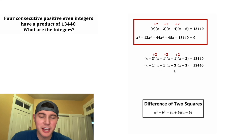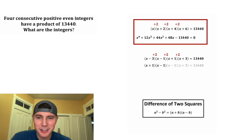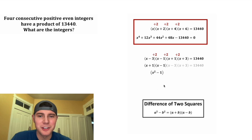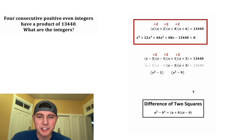If we rearrange them, we get a difference of two squares and another difference of two squares. x plus one times x minus one is just x squared minus one, and x minus three times x plus three is just x squared minus nine.